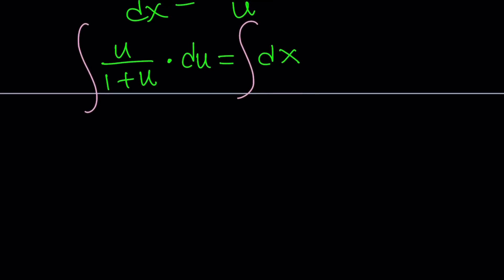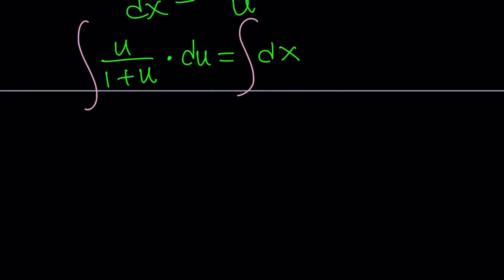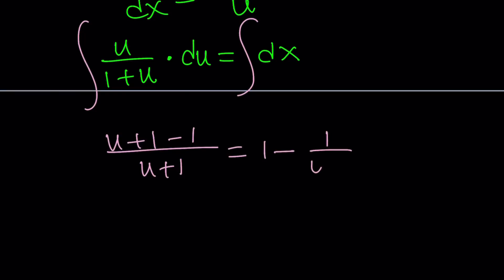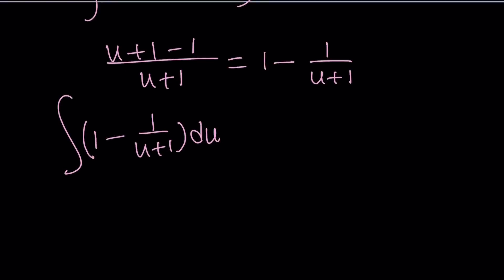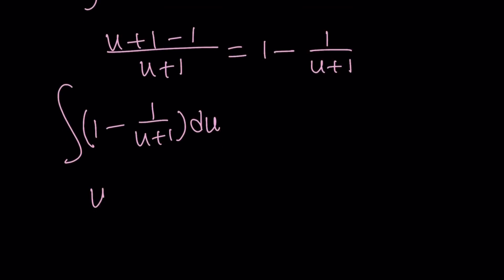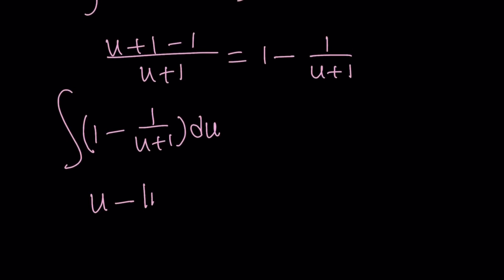Now our goal is to integrate both sides. On the left hand side we have u over 1 plus u. We can rewrite the numerator as u plus 1 minus 1, divided by u plus 1, which gives us 1 minus 1 over u plus 1. So this is what we need to integrate. If you integrate 1 you get u, and if you integrate 1 over u plus 1 you get ln of u plus 1.